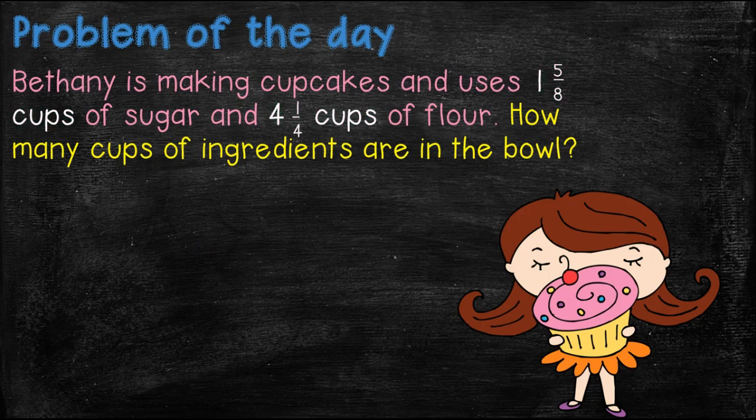Next thing we're going to do is highlight the important information. Here we have 1 and 5/8 cups of sugar and 4 and 1/4 cups of flour. So it's asking how many cups of ingredients are in the bowl, so we know we're going to have to add.